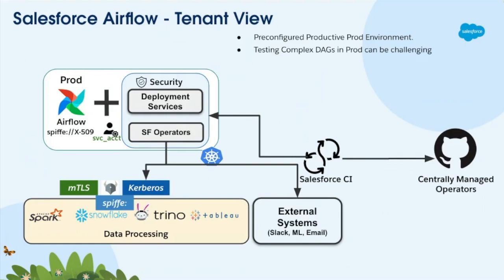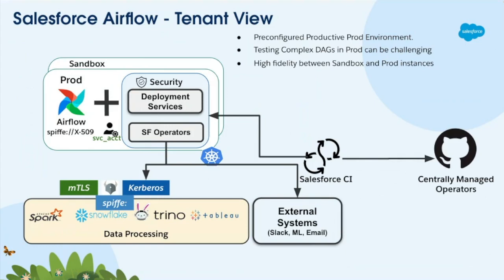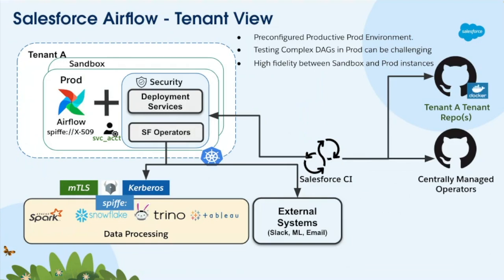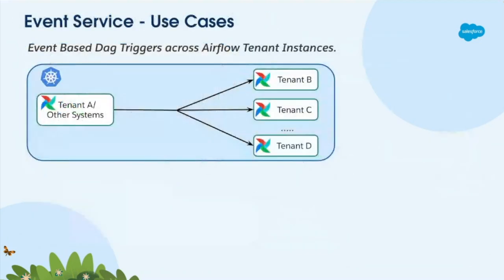What if you have a complex DAG with a lot of configurations with other systems? We provide a sandbox instance with high fidelity between prod and sandbox — if you can test everything on sandbox with a similar setup, it's going to work on prod. What if you have a DAG that depends on another DAG that lives in another instance? You can exchange API keys or poll for it, but that wastes cluster resources and exchanging API keys means other tenants can call anything on your cluster. We don't want that, so we came up with the event service.